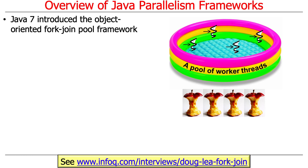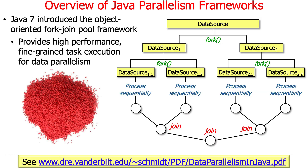Java 7, which came out around the 2009-2010 timeframe, introduced the fork-join-pool framework — a so-called object-oriented framework for parallel processing. If you want a really interesting overview of fork-join-pool, take a listen to an interview with Doug Lee, who wrote the fork-join-pool framework. The fork-join-pool provides a high-performance, fine-grained task execution model that supports so-called data parallelism.